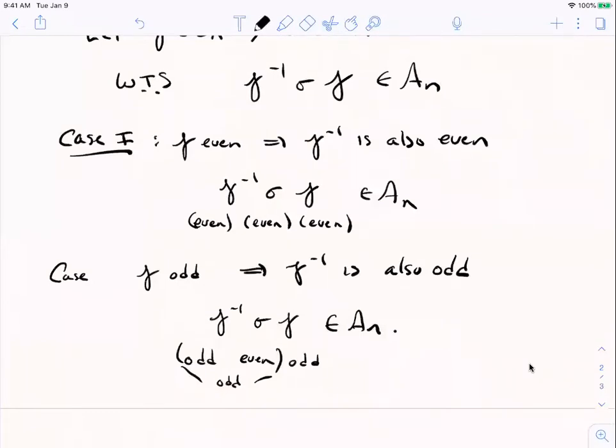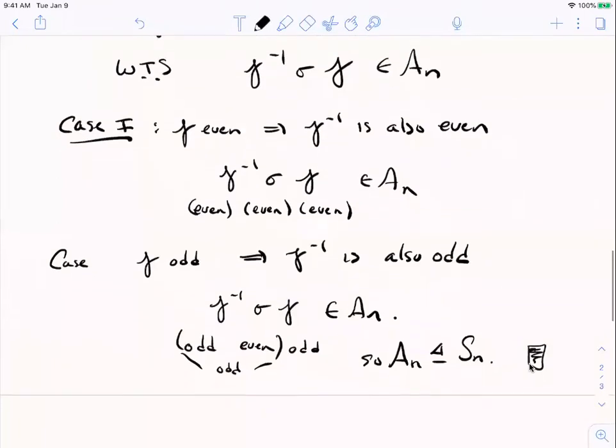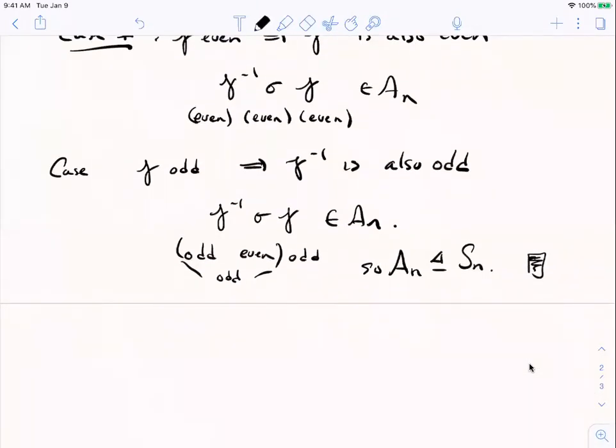So in both cases, the gamma inverse times sigma is an element of An. So A sub n is in fact the normal subgroup of S sub n. Cool. It all comes from that kind of multiplication principle that even times even is even. Even times odd is odd. Even, or odd times odd is even. And if that sounds weird, you know, when I say like even times odd is odd, that's certainly not true in the integers because I'm talking about permutations here. I'm talking about numbers of transpositions. Okay. Cool. So the last thing I wanted to try to convince you of is this theorem 333.